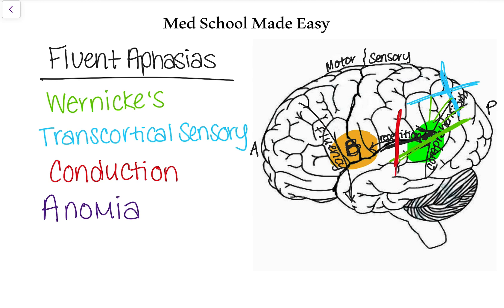The last fluent aphasia is anomia. Make sure you specifically test naming of items — point at your watch and ask what it is, or take out a pen and have them name it. If they can't name objects but everything else is intact, they have anomia. Anomia isn't in any specific part of the brain — it just doesn't impact fluency, repetition, or comprehension. There is brain injury, just not in those important spots, and the only deficit is they can't name things. Repetition and naming are very important when testing stroke patients to figure out what kind of aphasia they have. Stay tuned for non-fluent aphasias in the next video.